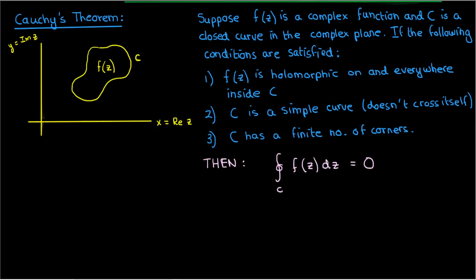If all these three conditions are satisfied then the contour integral around c of f(z) dz is a big fat zero. To summarize, if f is holomorphic, then its contour integral along a nice enough closed curve will be zero.